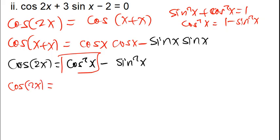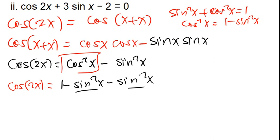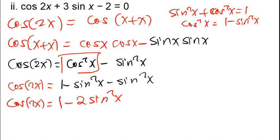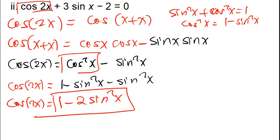So cos2x equals 1 minus sin²x minus sin²x, which gives us cos2x = 1 minus 2sin²x. I can now replace cos2x with this expression. Cos has disappeared — I only have sin now.